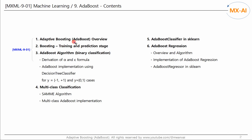So far, we have looked at an overview of Adaboost and the basic algorithm for binary classification, and derived the formulas for alpha and epsilon. In the next video, we will implement Adaboost for binary classification using this algorithm.